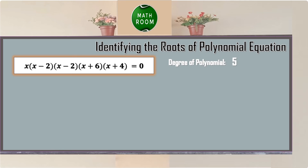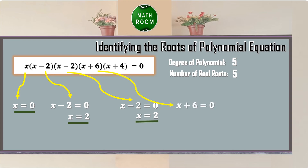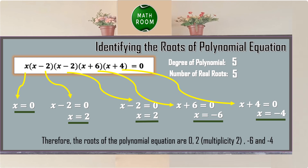According to the theorem, the number of real roots is 5. Equating each factor to 0: x equals 0 is the first root; x minus 2 equals 0 gives x equals 2; the repeated factor gives x equals 2 again; x plus 6 equals 0 gives x equals negative 6; x plus 4 equals 0 gives x equals negative 4. Therefore, the roots are 0, 2 (with multiplicity 2), negative 6, and negative 4.